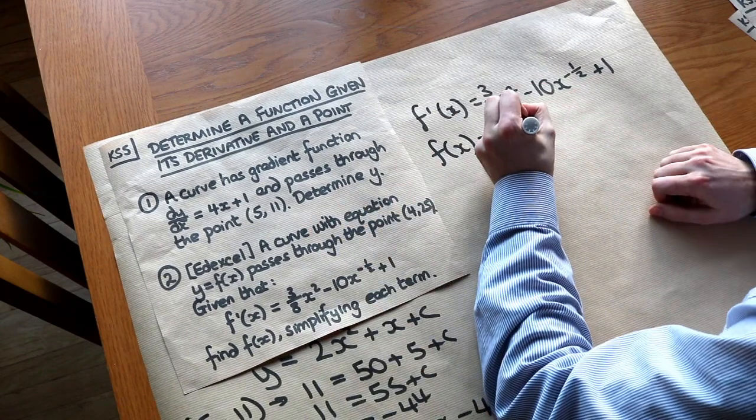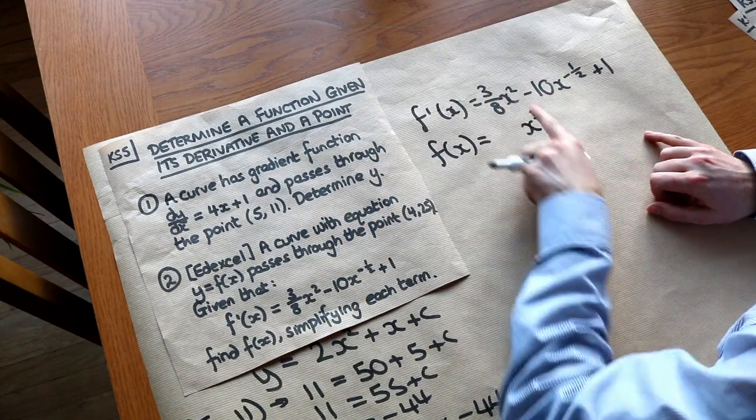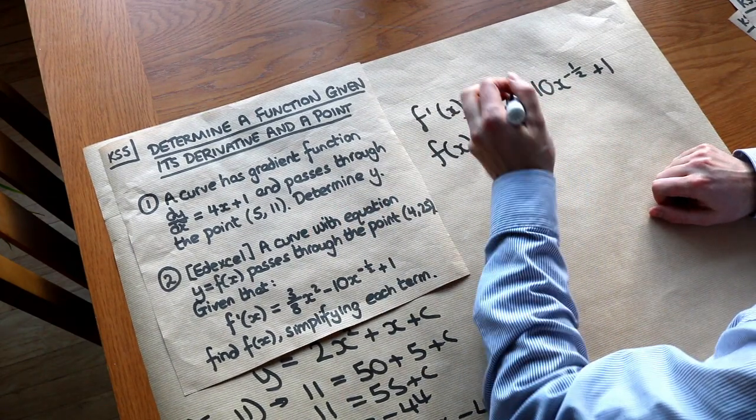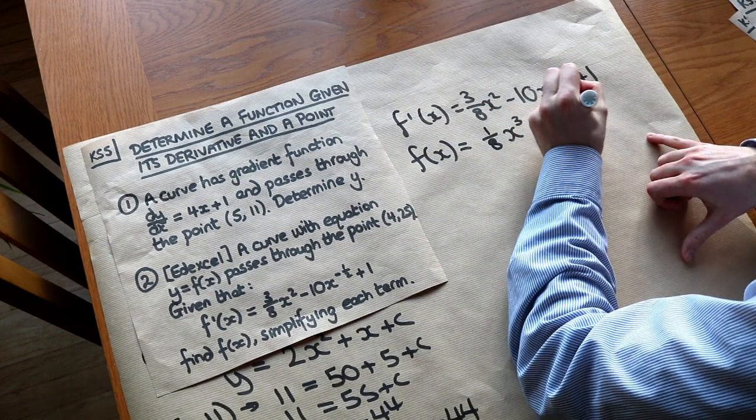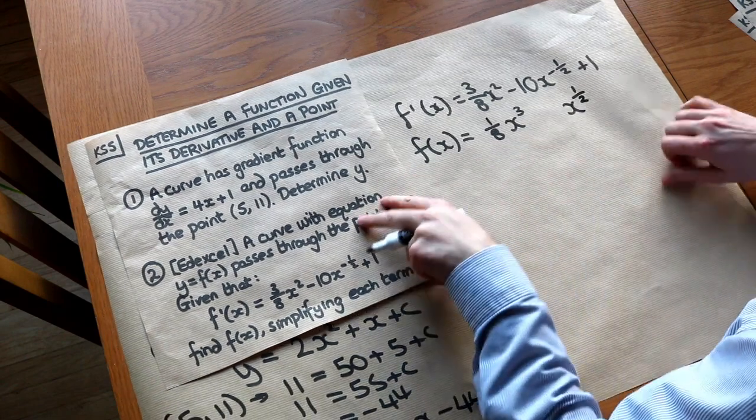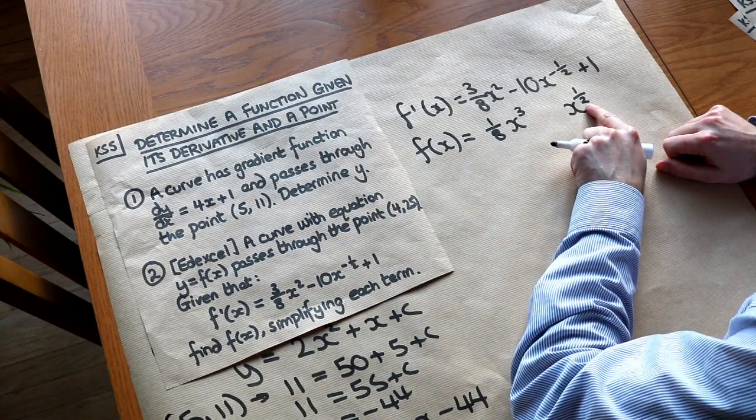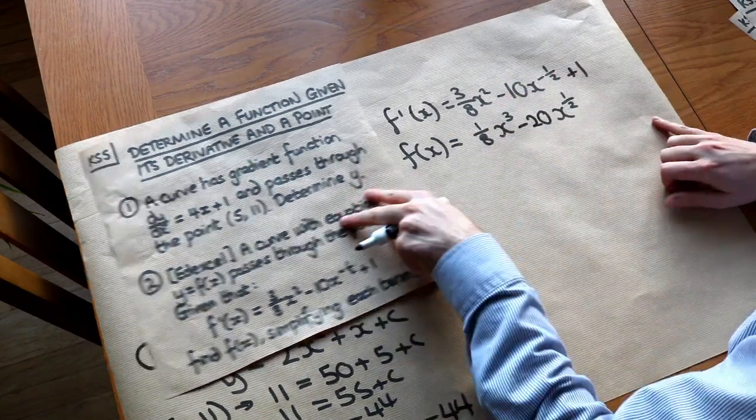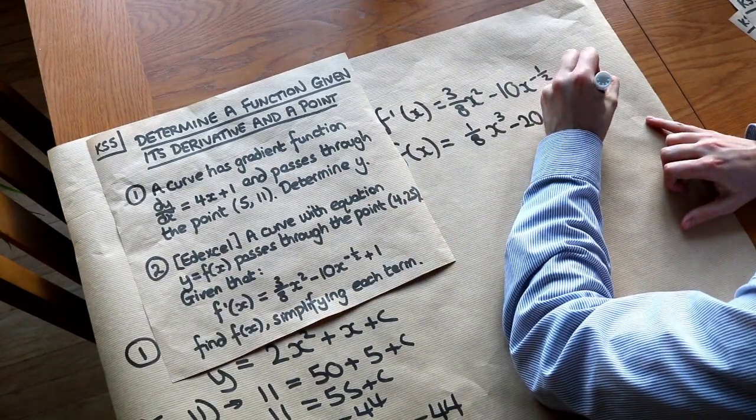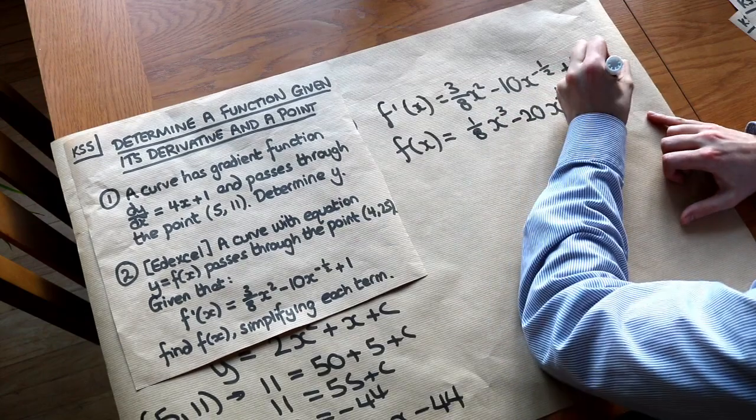So we add 1 to the power, that becomes x³, and then we divide by that 3, so the 3/8 becomes 1/8. We add 1 to this power, so that becomes x to the positive 1/2, and then we divide by the 1/2, that's the same as multiplying by 2, so that becomes -20. The +1 becomes +1x, or just x. And then we've also got this plus c.